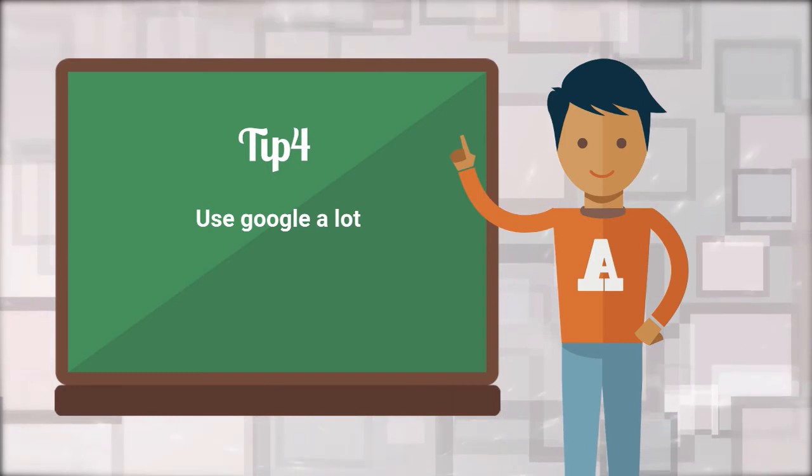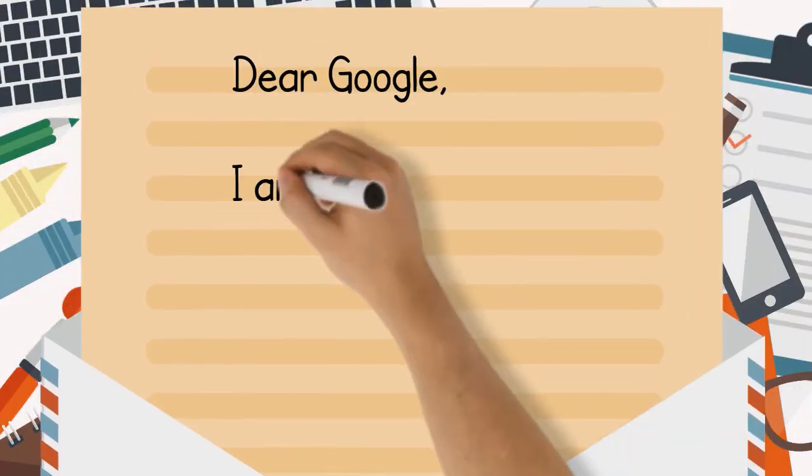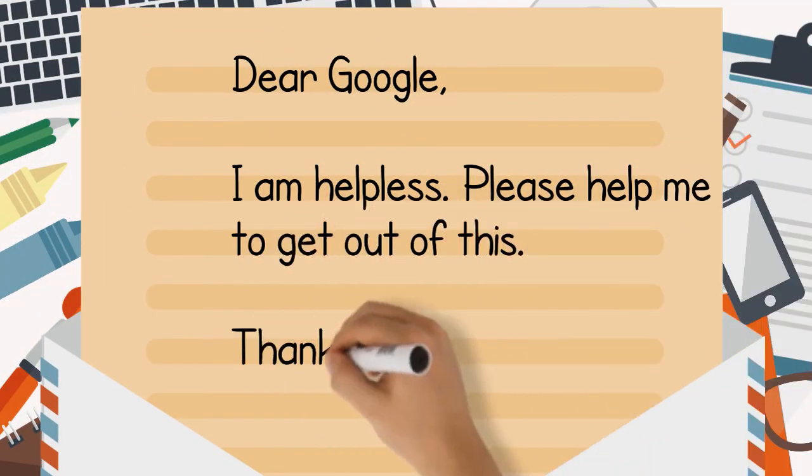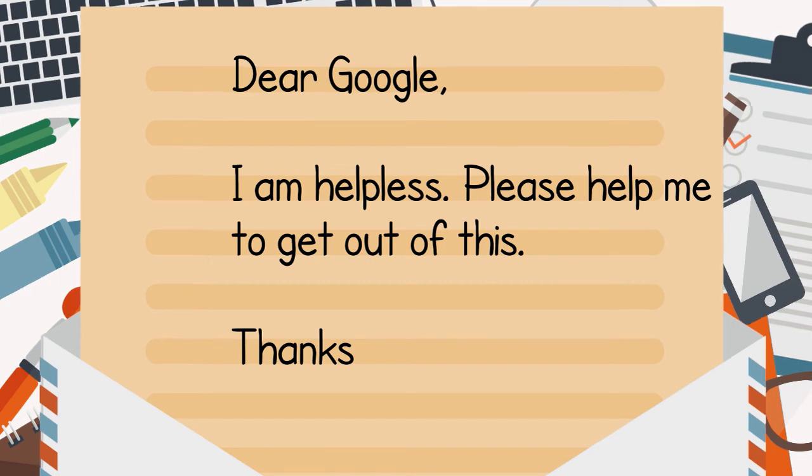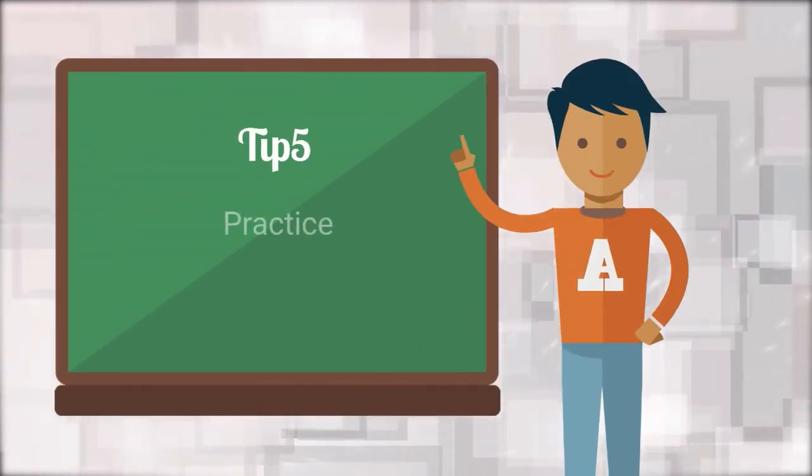Tip number 4 that we have for you is use Google a lot. Try to use Google as much as you can. By using Google, your job becomes very easy. You can get help at any time and anywhere in the world. It teaches how to code. You can't imagine the life of a developer without Google.